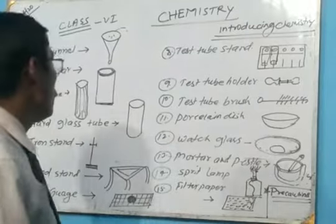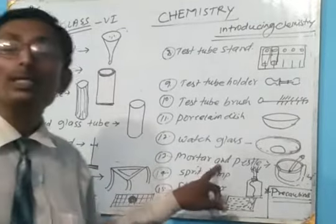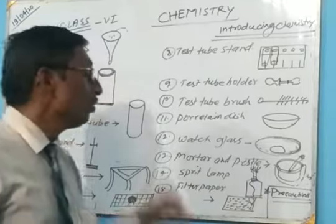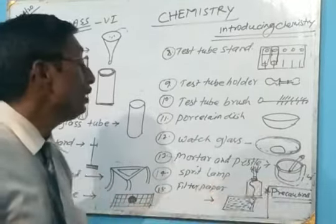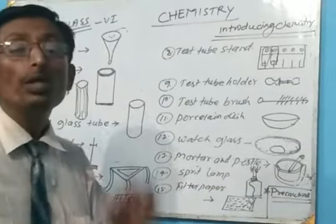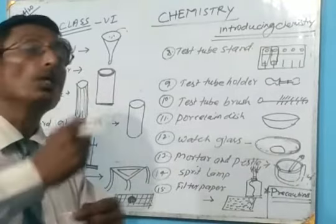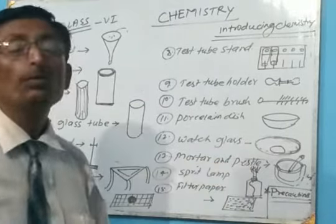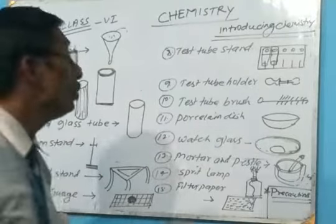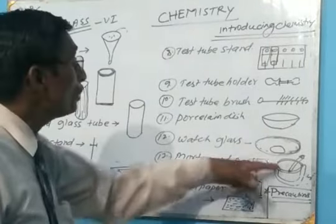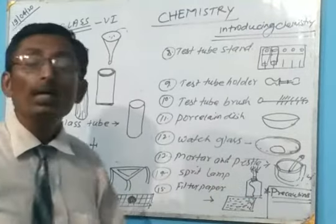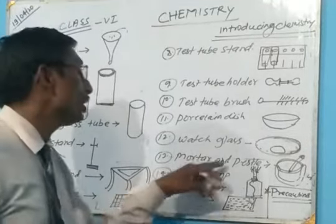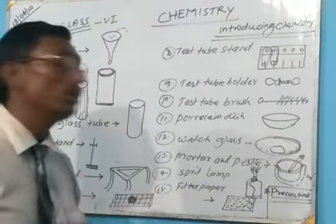There are 13 apparatus: mortar and pestle. Mortar and pestle are a type of apparatus in which we keep a substance and grind it, which becomes a smaller size. So we can use mortar and pestle in the lab. It is also made up of porcelain.